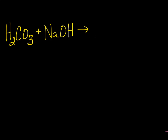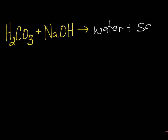Let's try one more practice problem. If you're up for it, hit pause and try to do it by yourself. We have an acid — we know this because it starts with H — plus a base — we know this because it has a hydroxide or OH. A reaction between an acid and base produces water and salt. Our acid has H with a 1+ charge, and the anion is CO3 carbonate, which has a 2− charge. The base is made up of sodium as the cation, with a 1+ charge, and hydroxide with a 1− charge.